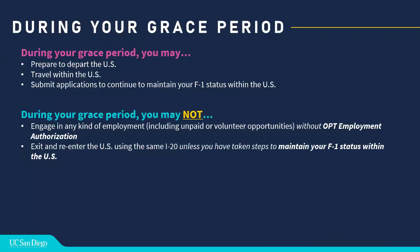Let's talk about what you can and cannot do during this grace period. During your 60-day grace period, you can definitely plan to depart the U.S. or prepare to depart — this might include packing your belongings, selling a car, whatever it might be. You can also travel within the U.S. Many of you might decide to take a road trip within the U.S., and travel within the United States is perfectly fine during your grace period. You can also submit applications to continue to maintain your F-1 status and stay in the U.S., such as applying for OPT or applying to start a new program.